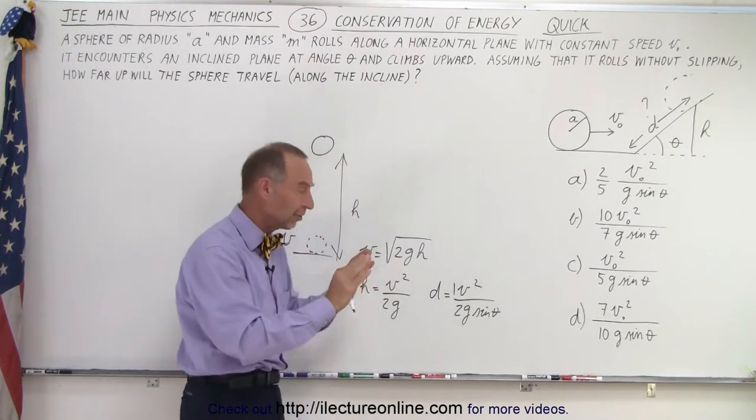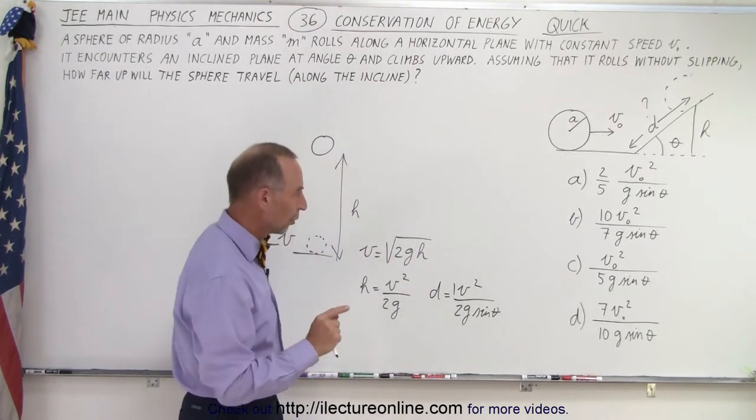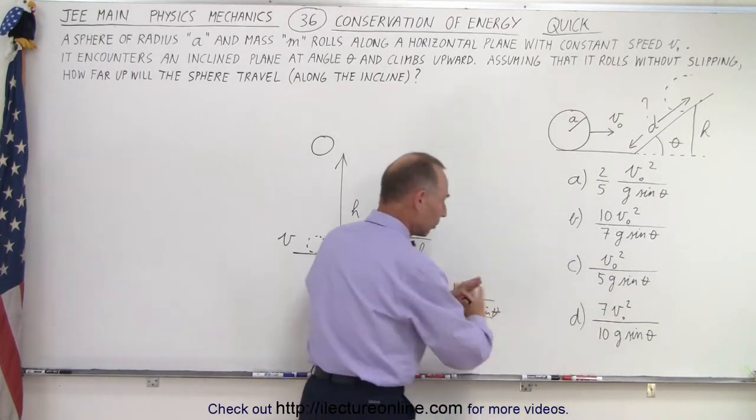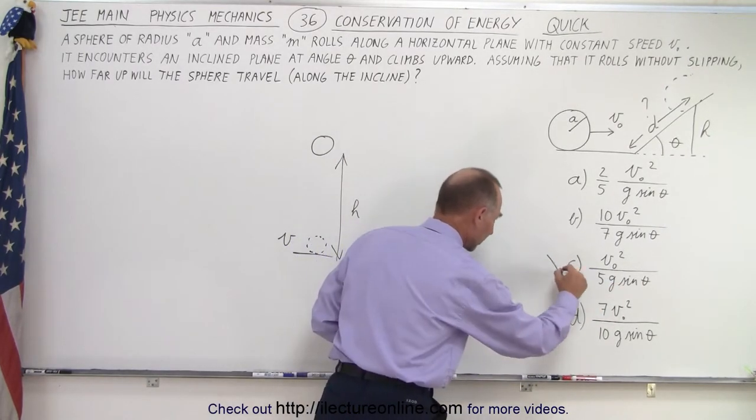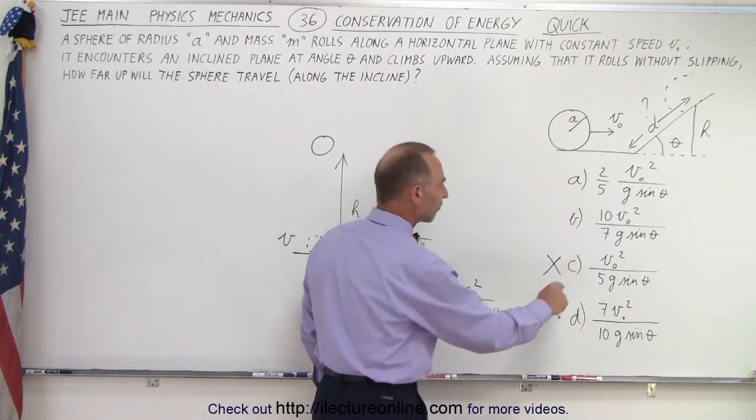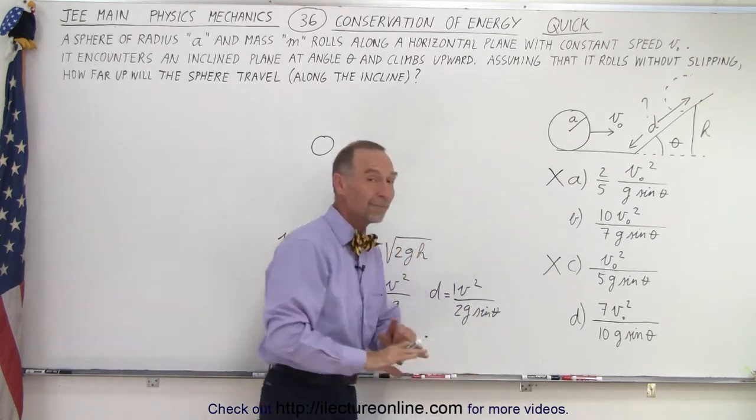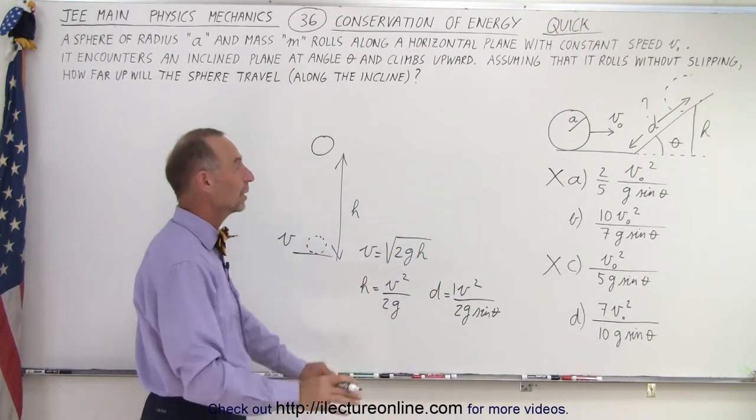In no way should the answer be this or less. That is not a possible answer. It has to be greater than that. Here we have one fifth v squared over g sine theta, which is not possibly the answer. And here we have two fifths. It should be at least one half, so this cannot be a possible answer either. Immediately, we've eliminated two of the answers.